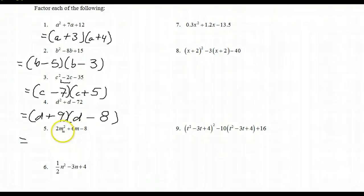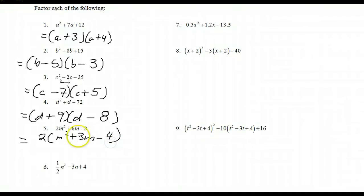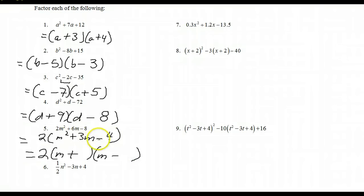This one is a little different — it looks like it has a leading coefficient other than 1, but 2 is a common factor. Our first step in factoring, going back to grade 10, is to factor out the common factor if there is one. So we write out the 2 and factor it from the expression. Since the last term is negative, we have an m plus and an m minus. We need two numbers that multiply to 4 and differ by 3 — the numbers are 4 and 1, with the 4 positive. Check: m squared minus 1m plus 4m gives plus 3m minus 4.